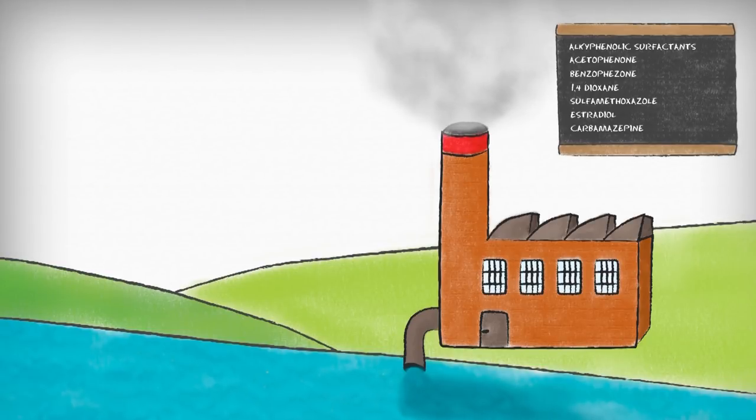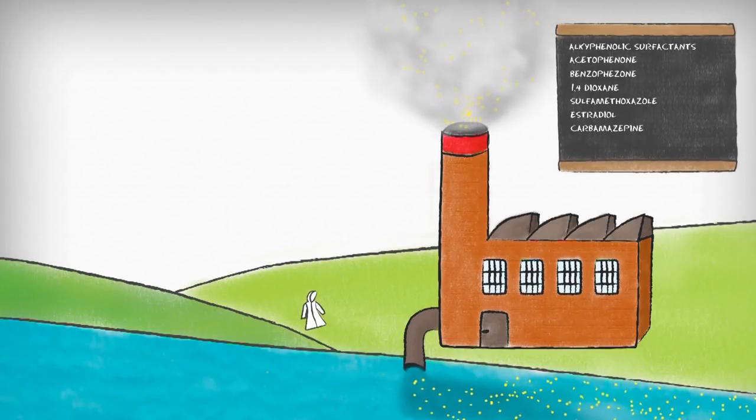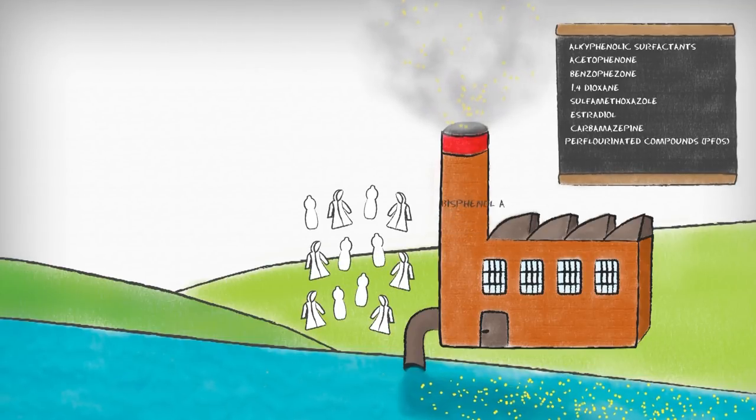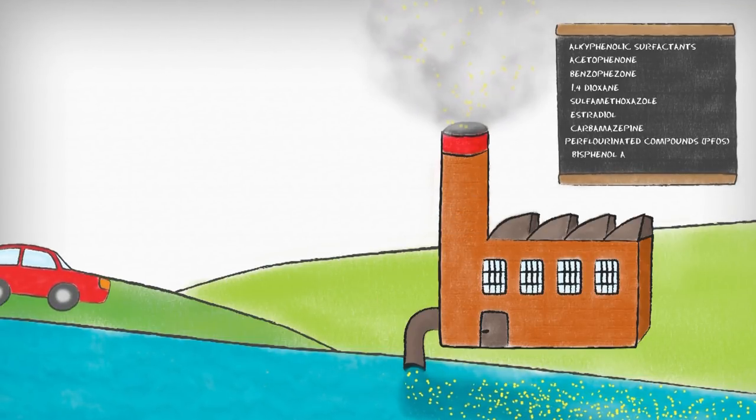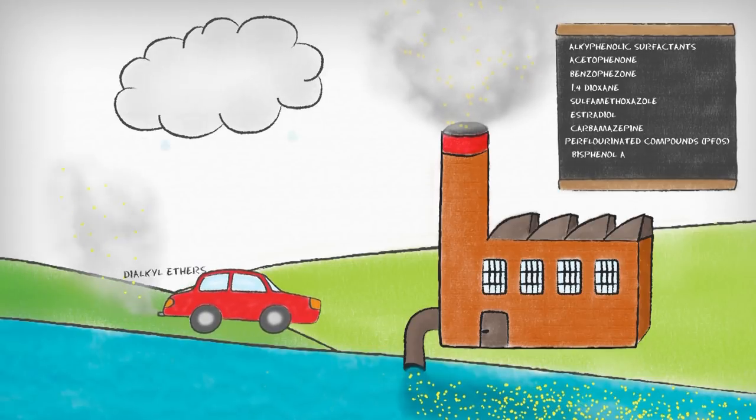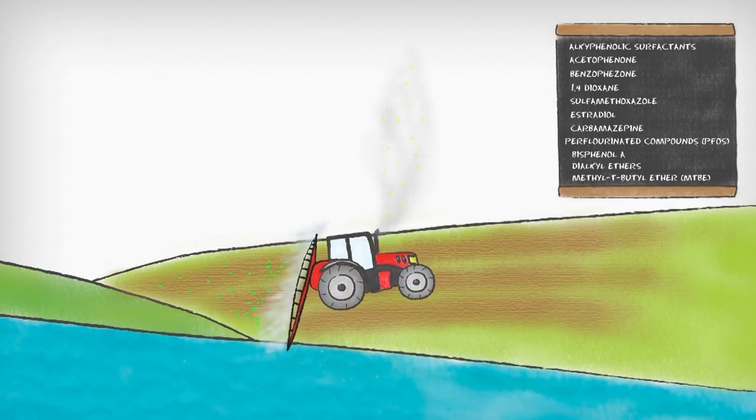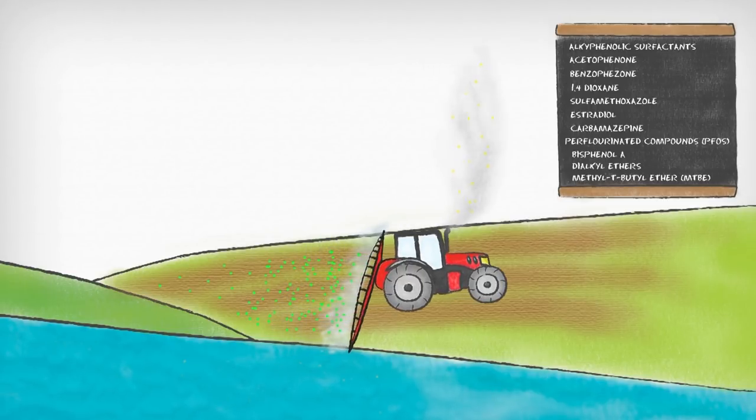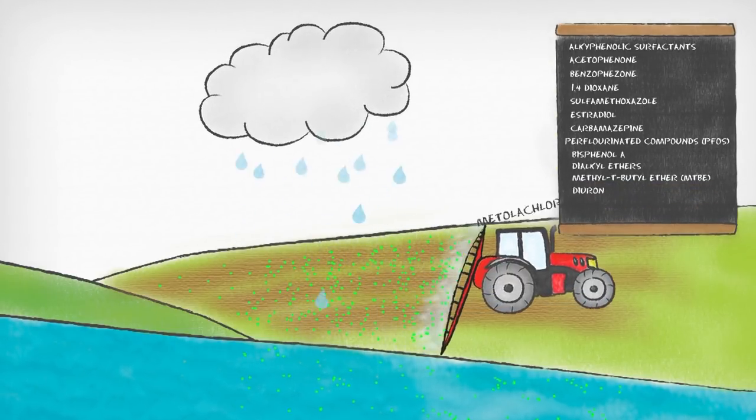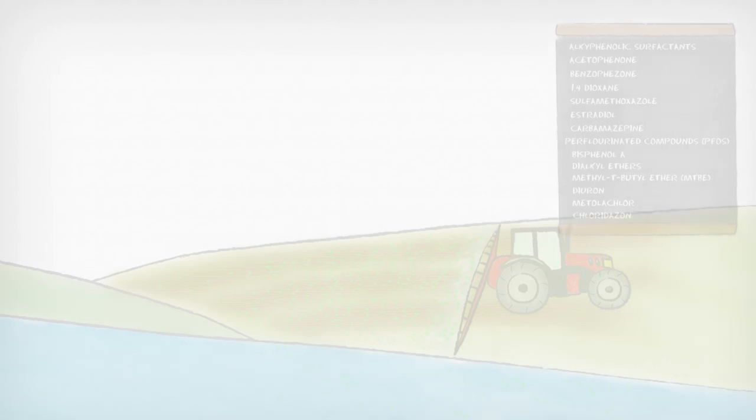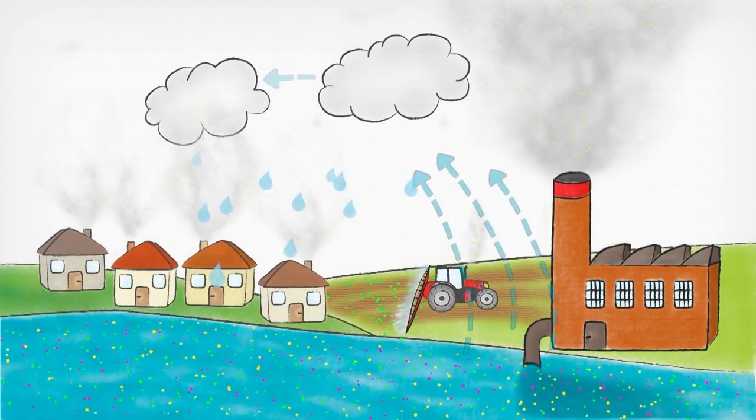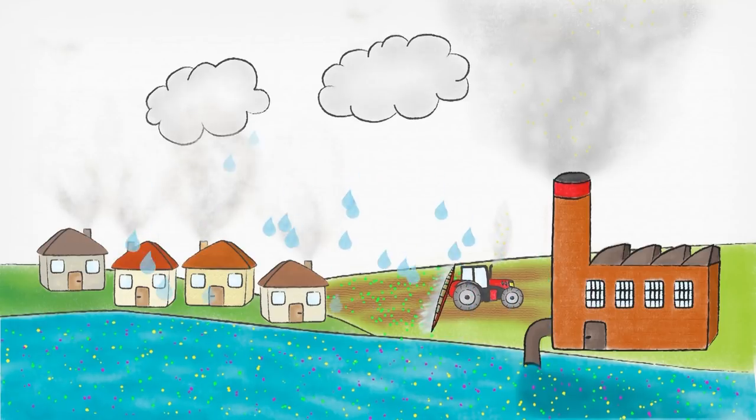Factories emit chemical substances into the atmosphere and the water when producing goods of everyday use. Car fumes add to the pollutants in the air, and eventually in the water. The use of fertilizers and pesticides in the production of our food is another significant source of emerging pollutants. The pollutants of all these activities eventually end in our water.